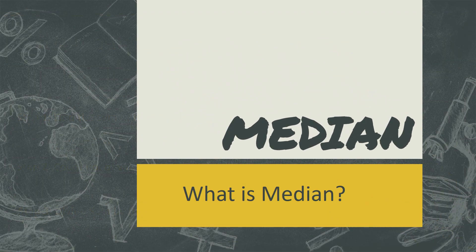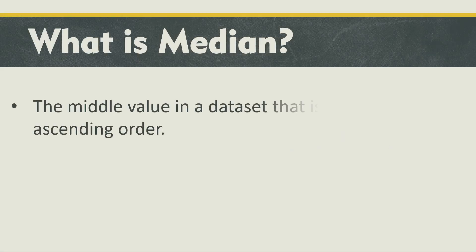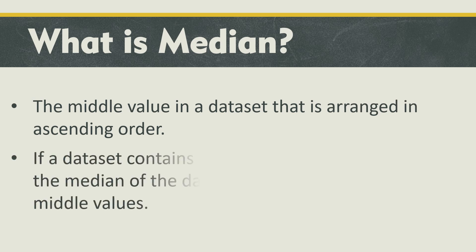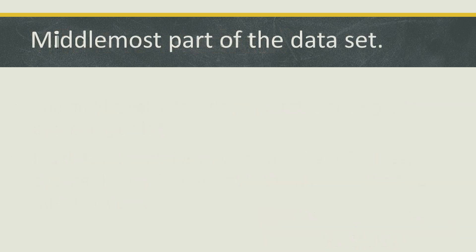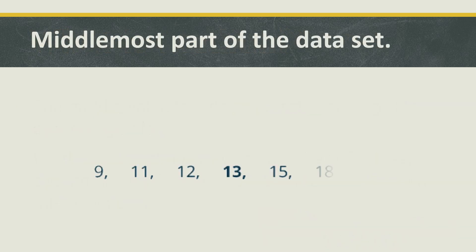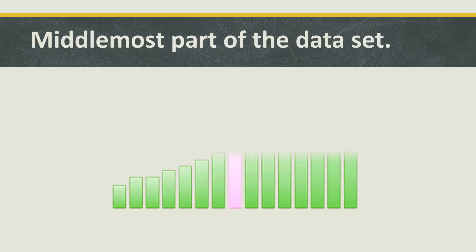What is median? The middle value in a data set arranged in ascending order. If a data set contains an even number of values, the median is the mean of the two middle values. Basically it's the middle-most part of the data set — it may have three numbers below it and three numbers above it, and the number left between them will be our median.